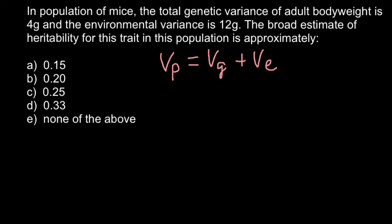The next formula would be narrow sense heritability, and we use h² (small h squared), and here we would have variance additive divided by total variance phenotypic.